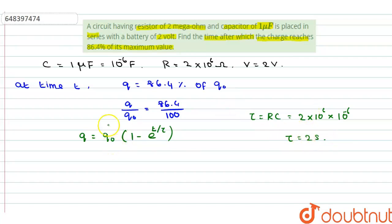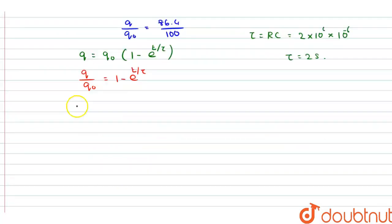So now, q by q0 is equal to 1 minus e to the power minus t by tau. Therefore, this can be written as e to the power minus t by tau is equal to 1 minus q by q0.